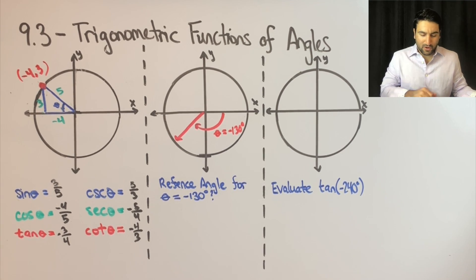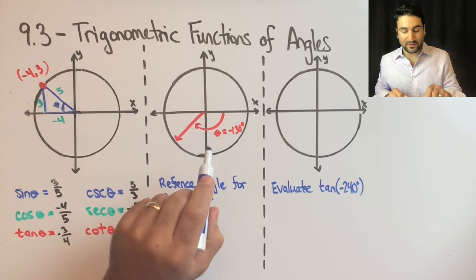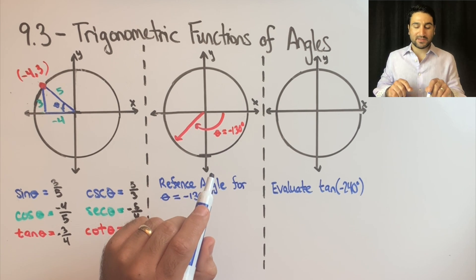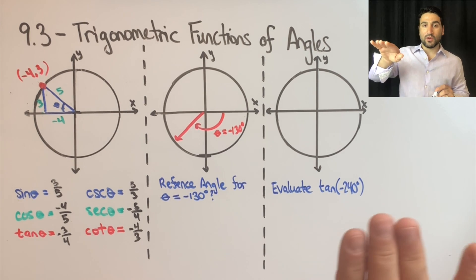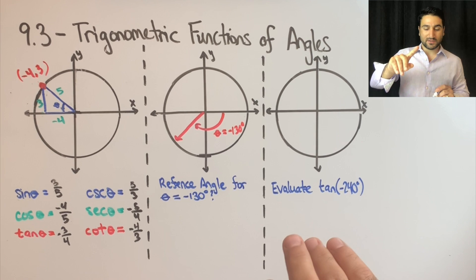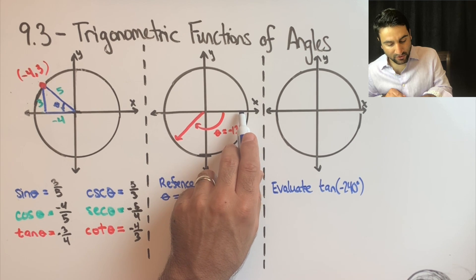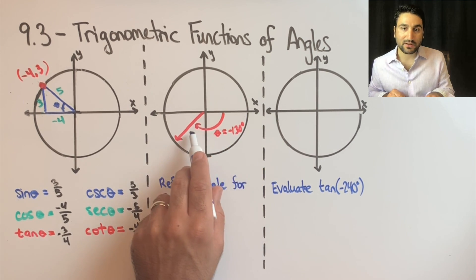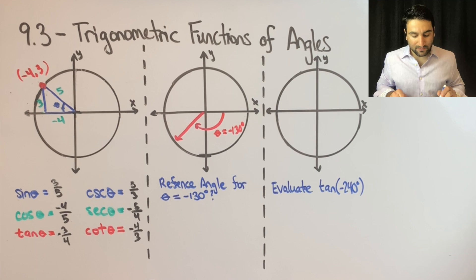So the next concept here is finding the reference angle for a given theta. The given theta is negative 130 degrees. So let's take a look here. If we have an angle of negative, it's going to be the same size of angle, it's just going to go in the opposite direction. So it's going to go clockwise instead of counterclockwise. So negative 130 starting from zero is going to go 130 degrees in the opposite direction. So we've graphed this, negative 130.